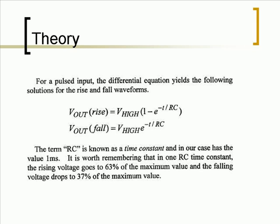The term RC is known as a time constant. In our case, it has the value of 1 millisecond. It is worth remembering that in one RC time constant, the rising voltage goes up 63% of the maximum value, and the falling voltage drops to 37% of the maximum value.